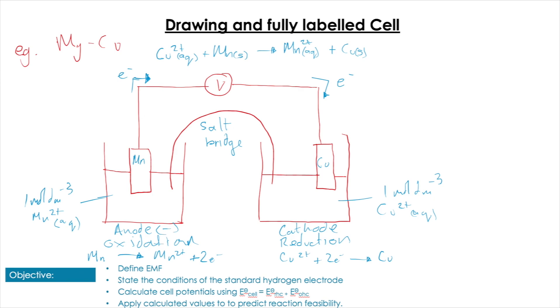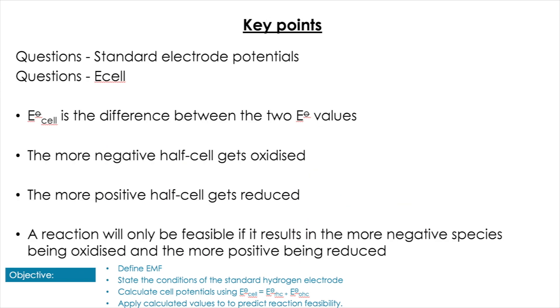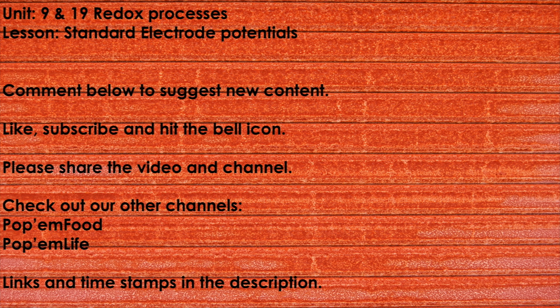Key points: focus on the difference between the two E°cell values and make sure the equations are going in the right direction, remembering that Table 24 only gives reduction potentials. Have a little practice, do some questions, and it should become easier and easier. Thanks for joining me - remember to like, subscribe, hit the bell icon, and as always, practice makes slightly better.